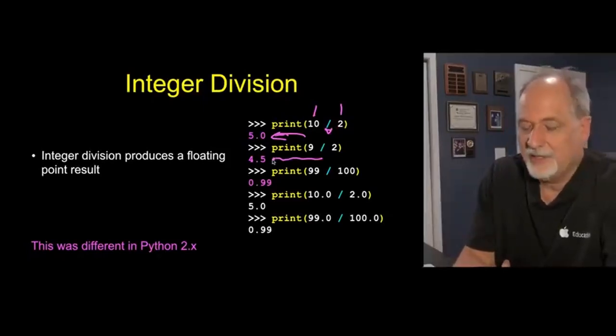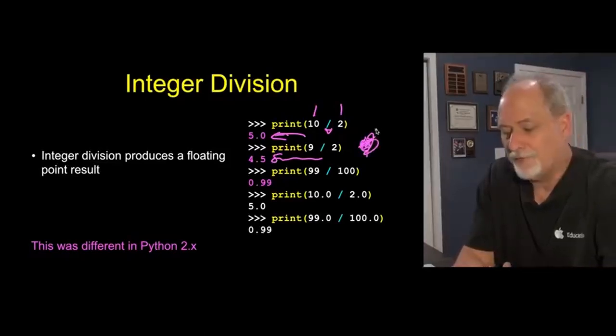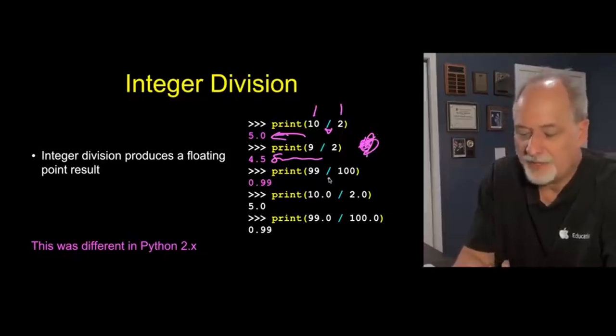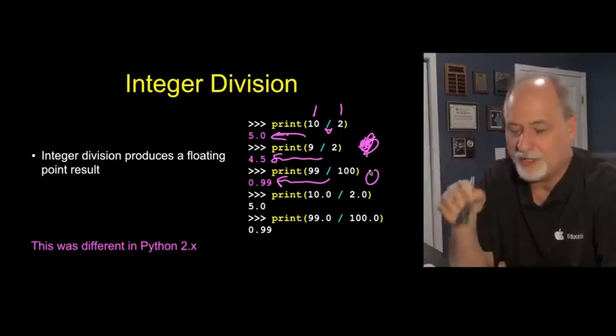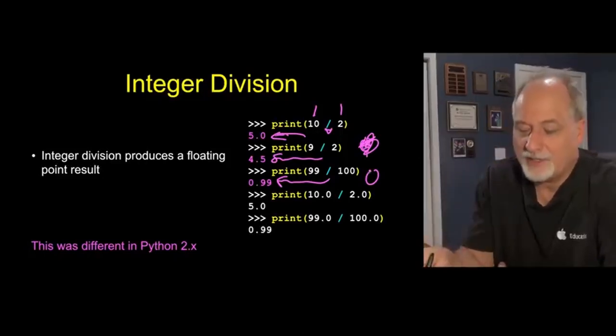9 over 2 is 4.5, and so that is accurate. In old Python 2, that would give us back 4, which is completely unpredictable and weird. The same with 99 over 100, as you would expect if this were a calculator, you get 0.99. Actually what you get in Python 2 is 0 because it would round it down. It doesn't round at all, it truncates it.